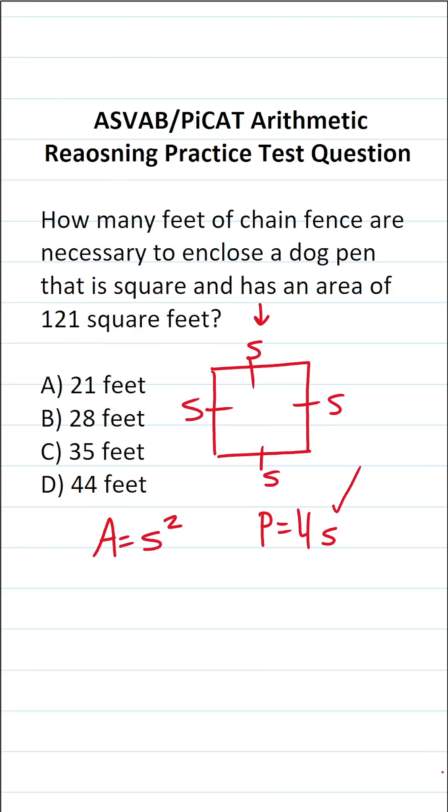Clearly, in order to find the perimeter of this dog pen, I have to know what S is. And I'm actually going to use the area formula of a square to do that. We know that the area of this square dog pen is 121 square feet. So I can replace A here with 121 equals S squared.